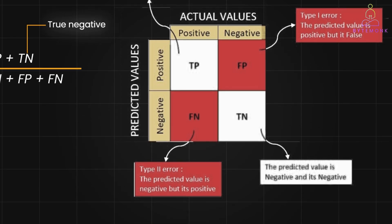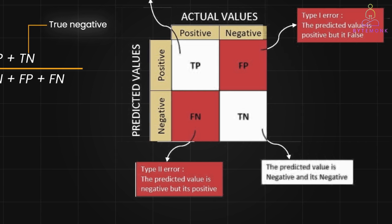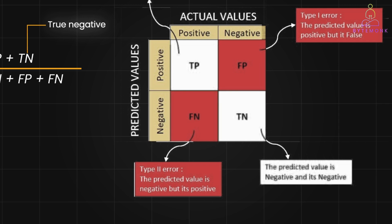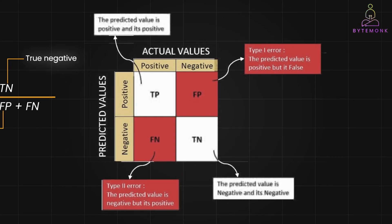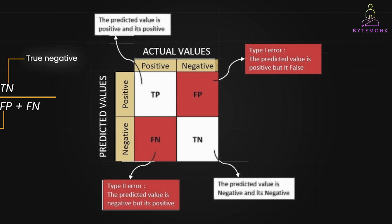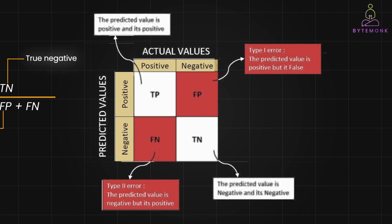True negatives or TN occur when your system predicts that an observation does not belong to a class, and it does not belong to that class. For example, your model correctly identifies a legitimate email as not spam. False positives occur when you predict an observation belongs to a class, when in reality it does not. For example, your model accidentally marks a legitimate email as spam. This is also called a type 1 error.